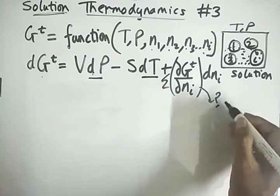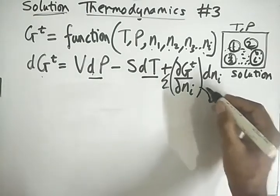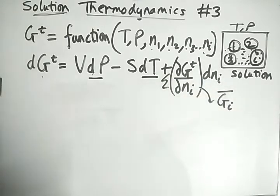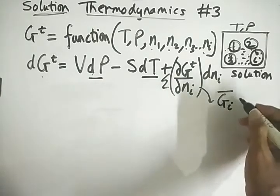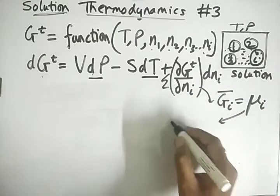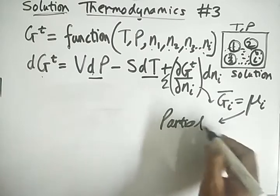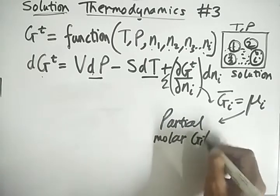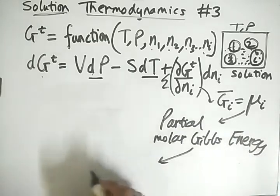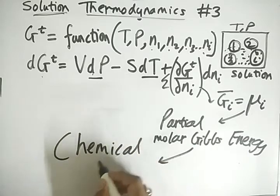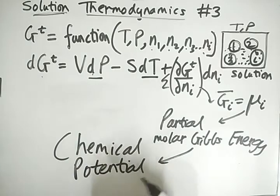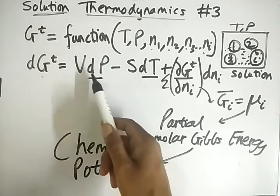This means del Gt upon del ni should be the partial molar Gibbs energy, G-bar of i. This is called mu-i, the partial molar Gibbs energy, and it was given the special name chemical potential.